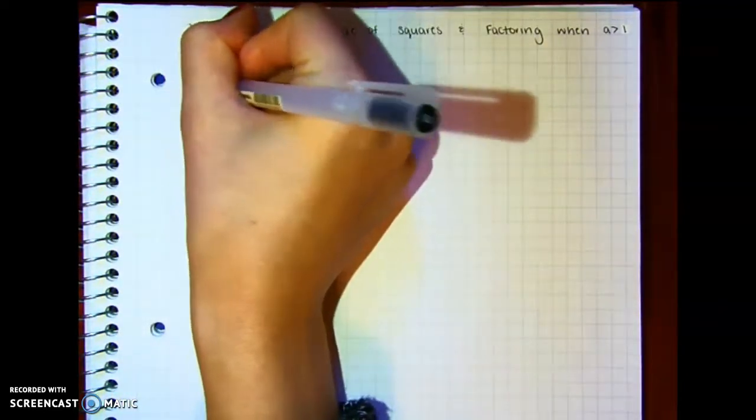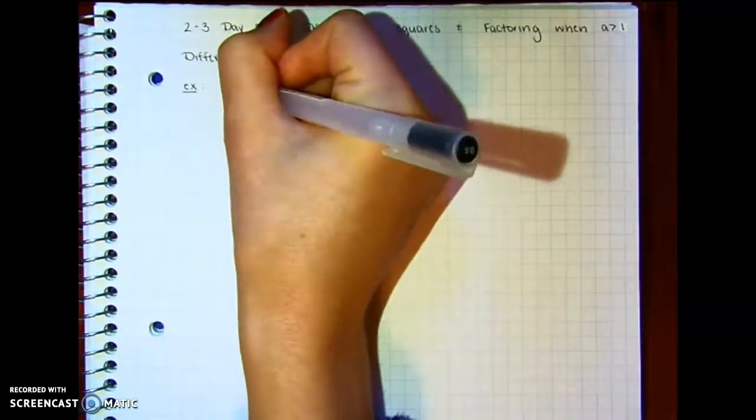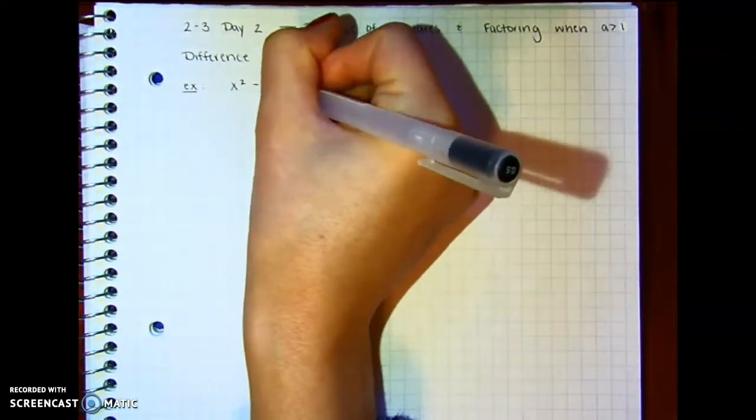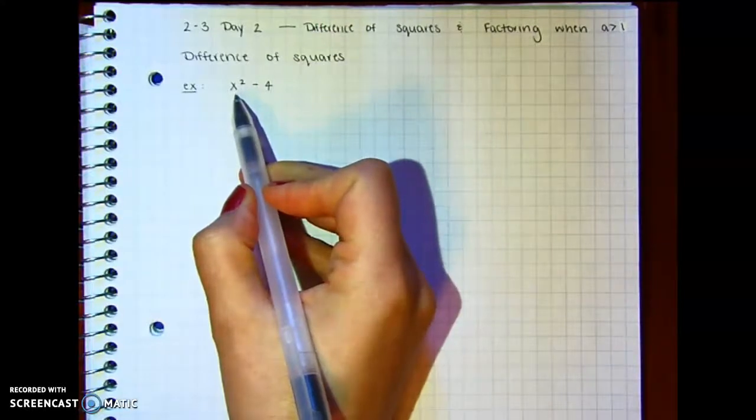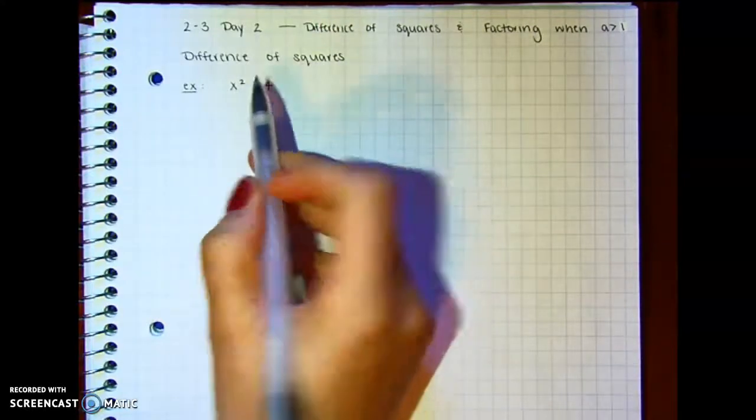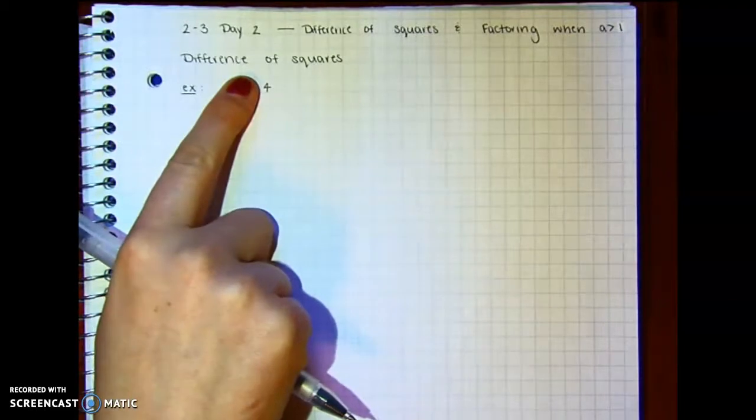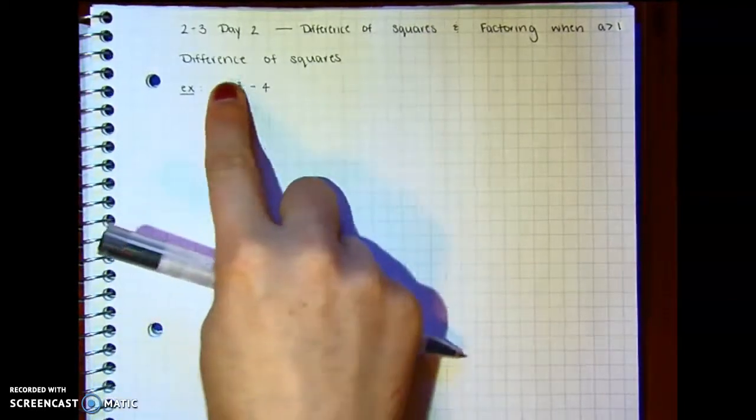So the difference of squares would be like x squared minus 4, because x squared is a perfect square and 4 is a perfect square, right. Square root of x squared is x, perfect square, square root of 4 is 2.